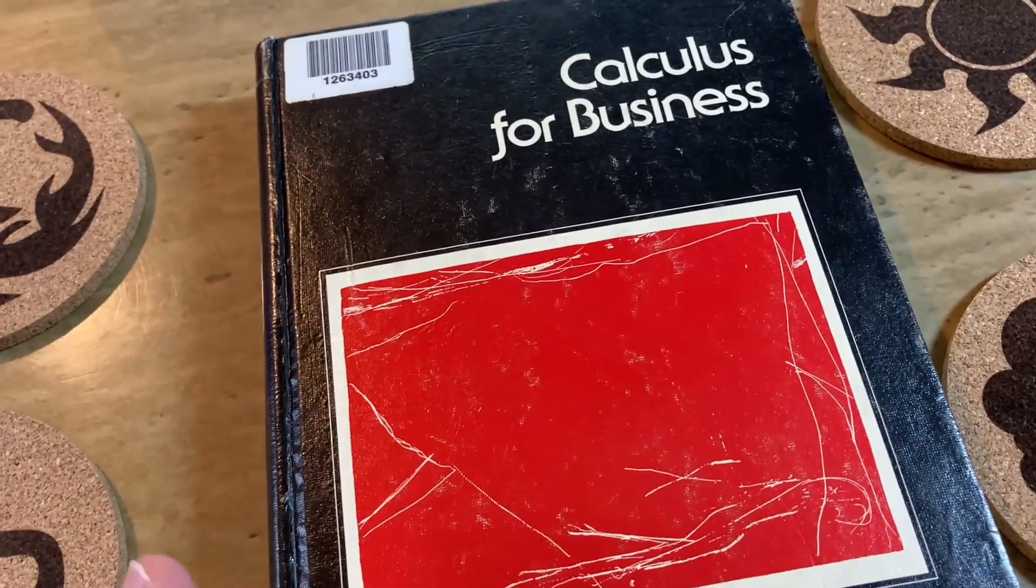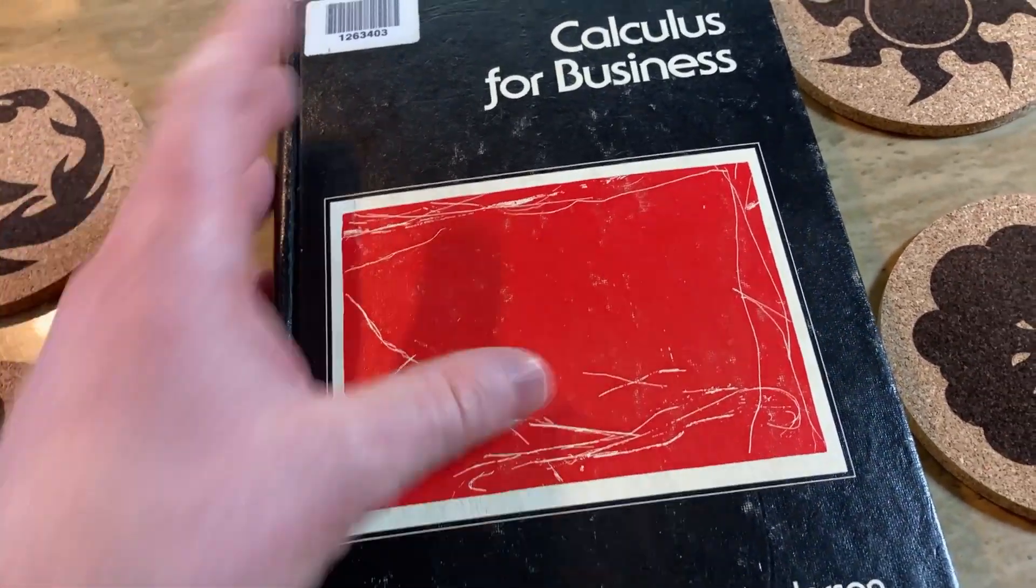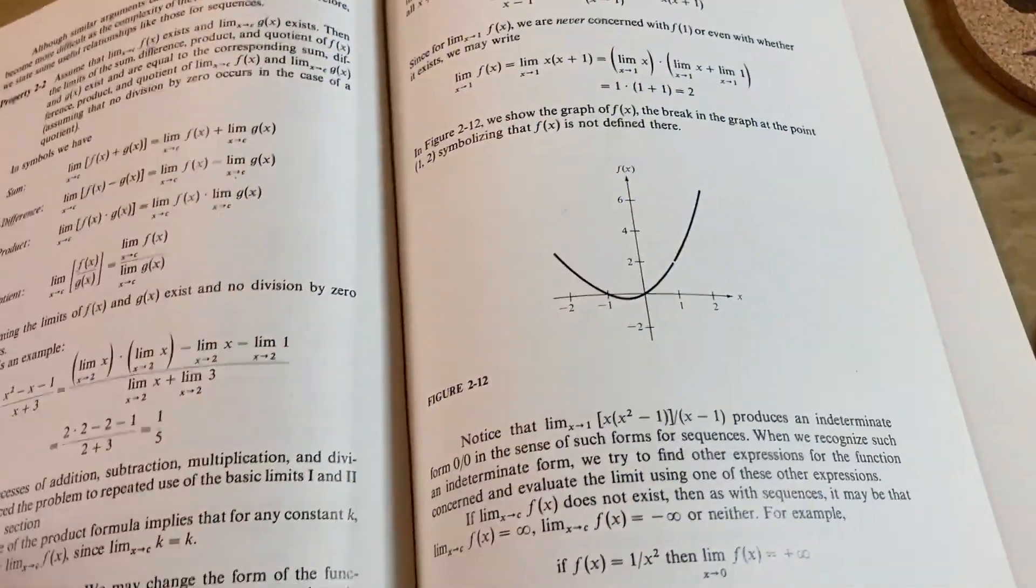I'm going to be an engineer. I'm going to study computer science, or maybe I'm going to study math. Why would I want a book that is on calculus for business? And the answer is because the explanations are usually a little bit more gentle, and a little bit more clear.